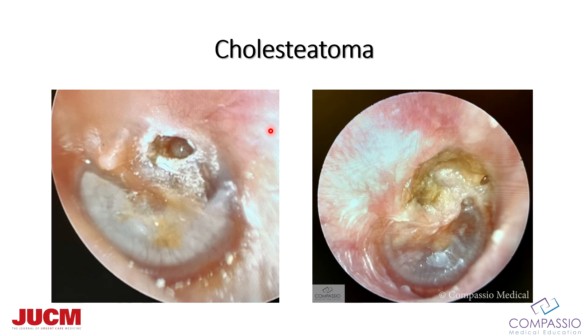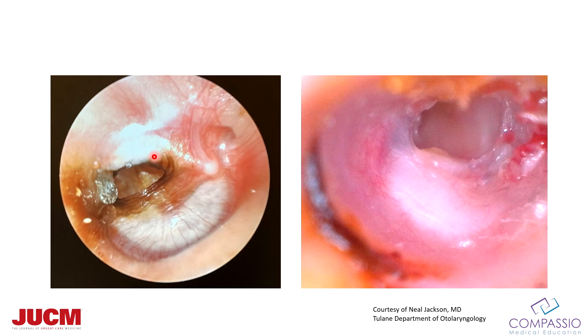Next up, cholesteatoma — you definitely want to refer these patients to the ENT provider as well. The most common locations are the same as retraction pockets: pars flaccida and the posterior superior aspect of the TM. Here's one on the left ear, posterior superior, eroding into that space — it's basically epidermis going into the middle ear. This right ear shows the whole pars flaccida and posterior superior quadrant eroding bone. Another place cholesteatomas may form is through an existing TM perforation. Here's a right ear with a TM perforation and a cholesteatoma starting to form, and here's a nice pearly cholesteatoma from migration of epithelium into the TM perforation. This is courtesy of Dr. Neil Jackson at Tulane University.